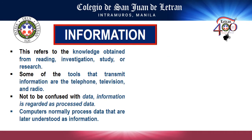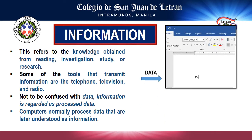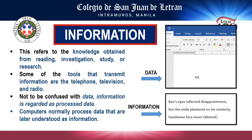First, let's talk about information. Information is the knowledge obtained from reading, investigation, study, or research. Not to be confused with data, because information is regarded as processed data. Computers normally process data that are later understood as information. For example, while typing on your laptop, you usually type in random letters on your keyboard to make up words and sentences. The typing on the keyboard is considered as input data. When the data becomes a word, becomes a sentence, it is now considered information.